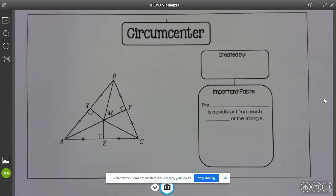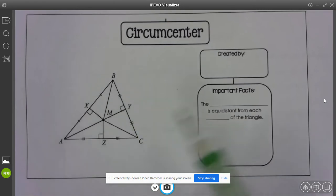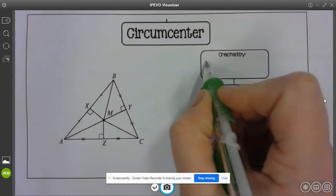Alright, so a circumcenter. Now we're going to actually start talking about what these centers are and what creates them. So looking here, if you look at this triangle, I see the perpendicular sign and I see that these are congruent, which tells me that this is created by perpendicular bisectors.